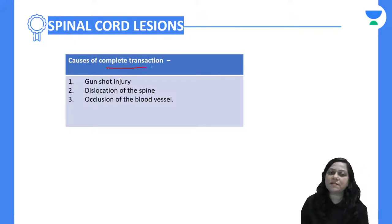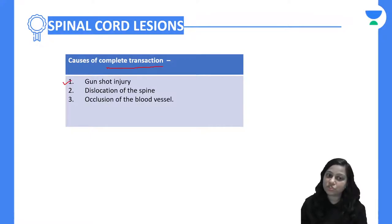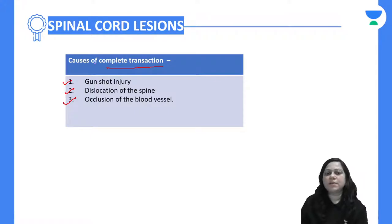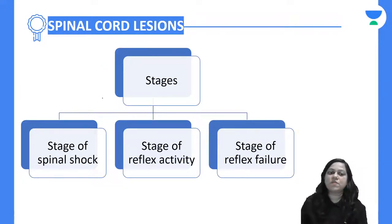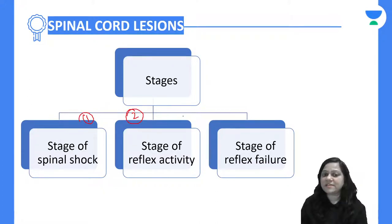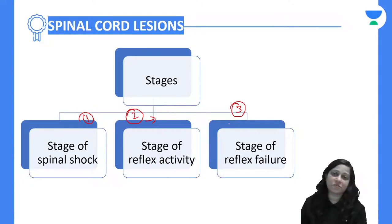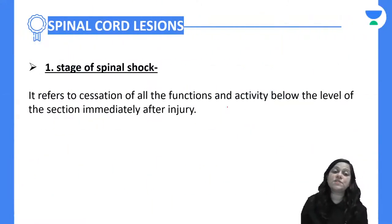What are the causes of complete transaction? Complete transaction of the spinal cord can occur in gunshot injury, dislocation of the spine, or due to occlusion of blood vessels. Once spinal cord lesion occurs, there are three stages: the stage of spinal shock, the stage of reflex activity, and if reflex activity is not regained properly, the stage of reflex failure.